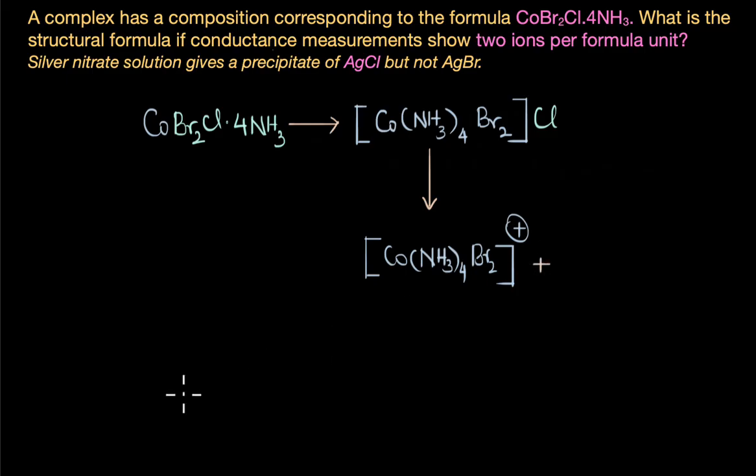When dissolved in water, this coordination compound would ionize to give the cation which is [Co(NH₃)₄Br₂]⁺ and counter ion which is the chloride ion. Here again we get exactly two ions in solution as given in the conductance measurement. Now what would happen if we added silver nitrate to the solution? It would react with chloride ion and precipitate AgCl.